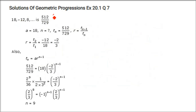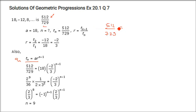We have a geometric progression and need to find which term is 512/729. We use the formula for the nth term: a·R^(n−1). So we equate: 512/729 equals a·R^(n−1). R is −12/18, which simplifies. We get 6^12 over 6^18, which is −2/3, raised to the power n−1.